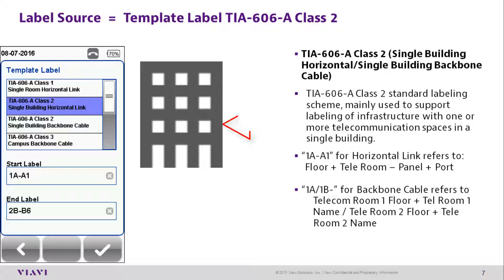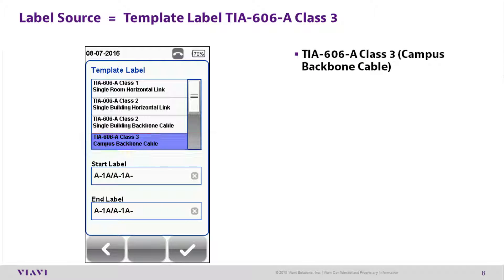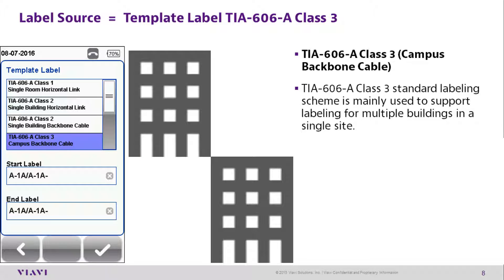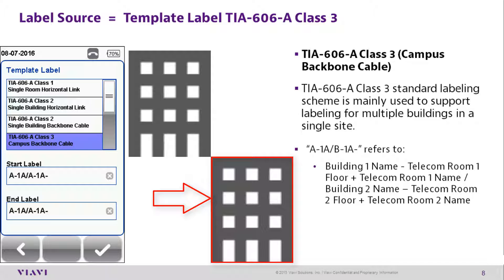1-Alpha-slash-1-Bravo refers to the floor of the first telecommunications room and its name, then the floor of the second telecommunications room and its name. Template Label TIA606 Alpha Class 3 covers Campus Backbone Cable. This standard labeling scheme is mainly used to support labeling for multiple buildings in a single site. Alpha-dash-1-Alpha-slash-Bravo-dash-1-Alpha refers to the name of the first building, the floor and name of the first telecommunications room, then the name of the second building, the floor and name of the second telecommunications room.